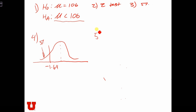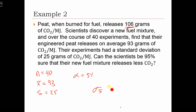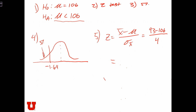Next, let's calculate the test. Z equals X-bar minus mu over standard error, which equals 93 minus 106, over standard deviation divided by root N. So the standard error of the mean equals S over root N: 25 over root 40. Let me grab my calculator. That basically equals 4, giving us a Z score of minus 3.25.